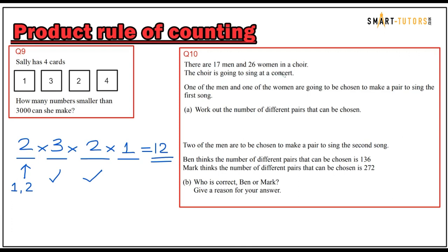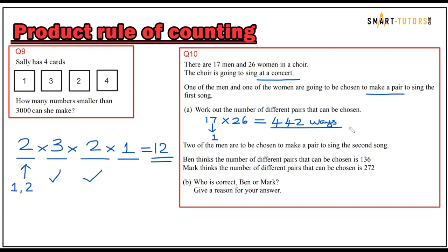Question number ten: There are 17 men and 26 women in a choir. One man and one woman are going to be selected to sing the first song. Work out the number of different pairs that can be chosen. You are selecting one man from 17 — so 17 chances — times 26 women. Both items are selected from different groups, so you do not divide. The answer is 442 ways — 442 different pairs.